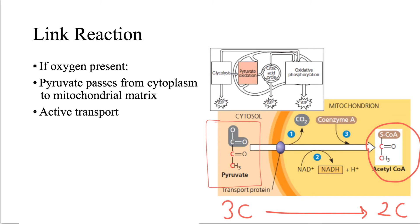We call this process decarboxylation, meaning that a carbon dioxide molecule is removed from the pyruvate. And then one hydrogen atom is removed by the process named dehydrogenation. The electrons are picked up by NAD. So reduced NAD is also a product of link reaction.